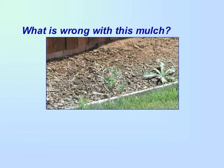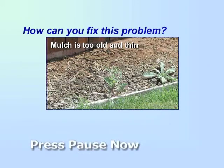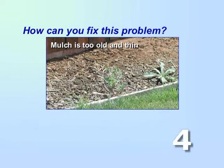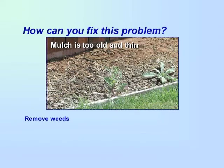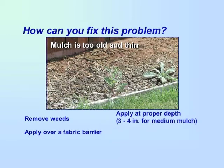What is wrong with this mulch? This mulch is too old and thin. How can you fix this problem? Remove all weeds. Mulch is more effective if applied over a fabric barrier. Be sure to apply mulch at the proper depth, about 3 to 4 inches for a medium mulch. Replenish mulch as necessary. Mulches must be maintained in order to work effectively. However, some weeds will sneak in — remove these weeds by hand as soon as you see them.